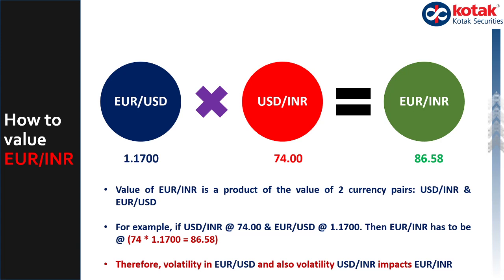Understand this very clearly. Euro INR is nothing but a multiplication of these two currencies. For example, if Euro dollar is 1.17 and dollar rupee is 74, Euro INR will be trading near 86.58. If it starts to go significantly outside this value, arbitrages will bring it back. So, if Euro INR has to go up or down, Euro USD and dollar rupee have to move accordingly.